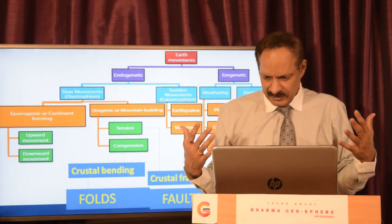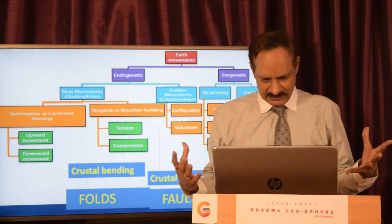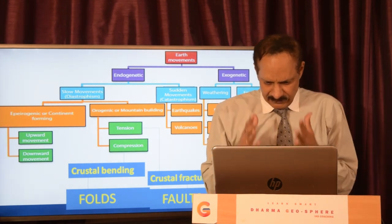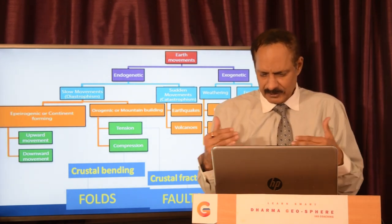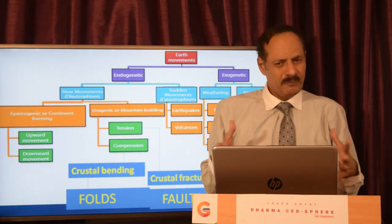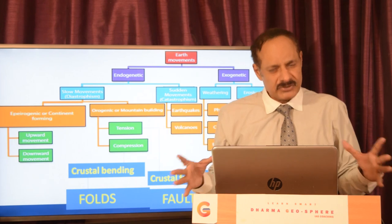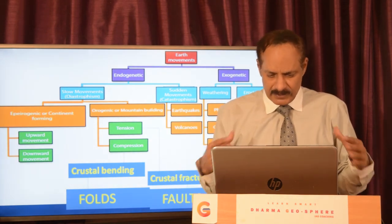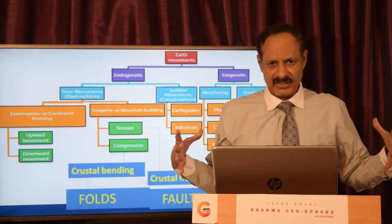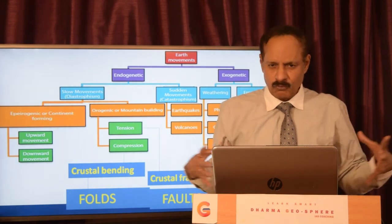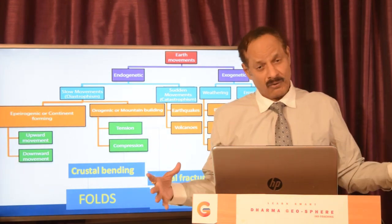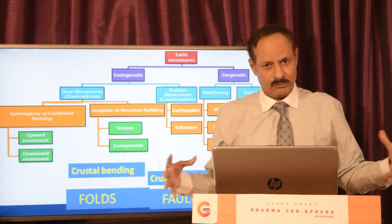Erosion can be through agents of glacier, river water, waves, wind, and underground water like karst. Tension can further be divided into crustal fracture or faults, mostly happening at divergent boundaries, and then compression — that is crustal bending or folding — happening at continent-continent, or also ocean-continent, or ocean-ocean boundaries.